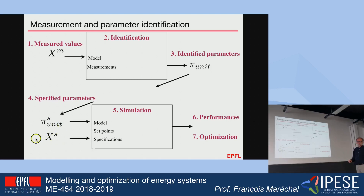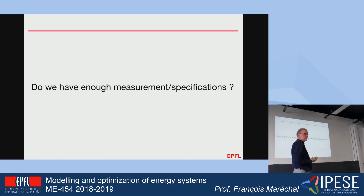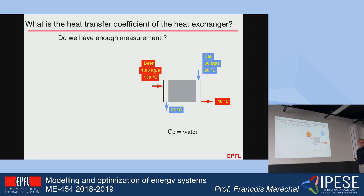For example, changing the outside temperature or the water temperature and seeing what happens to the performances. This will be very useful when sizing a new unit based on observations. So we have to ask ourselves: do we have enough measurements? Or do we have enough specifications in the system? Here is a simple example: a heat exchanger that needs to be characterized, and I would like to know if I have enough measurements.